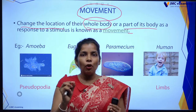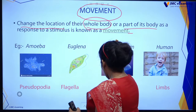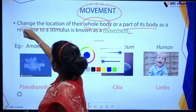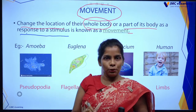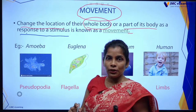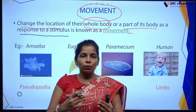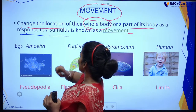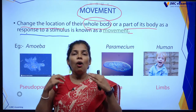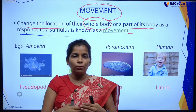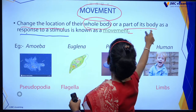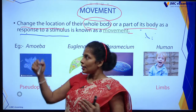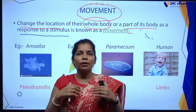This is the most important part. Movement is response to a stimulus. The meaning of movement is the change of location — change of location of their whole body or parts of the body — and response to a stimulus. Response to a stimulus is known as movement.